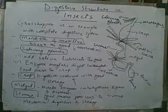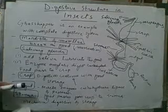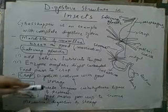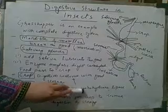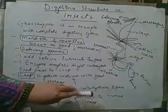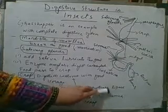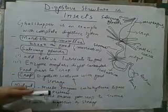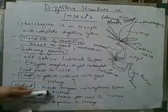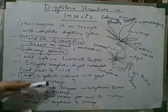There are three enzymes produced in the midgut: carbohydrase, which digests carbohydrates; lipase, which digests lipids; and protease, which digests proteins.